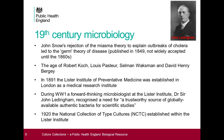This was the Lister Institute of Preventive Medicine, established in Chelsea, central London, with donations from the Guinness family. It had two primary aims: fundamental scientific research into the causes, prevention and treatment of disease in man and animals; and secondly, to prepare and supply protective and curative materials. There were no antibiotics at the turn of the 20th century, but the institute did develop vaccines and antitoxins, and was ranked internationally alongside the Pasteur Institute and the Rockefeller Institute in New York.